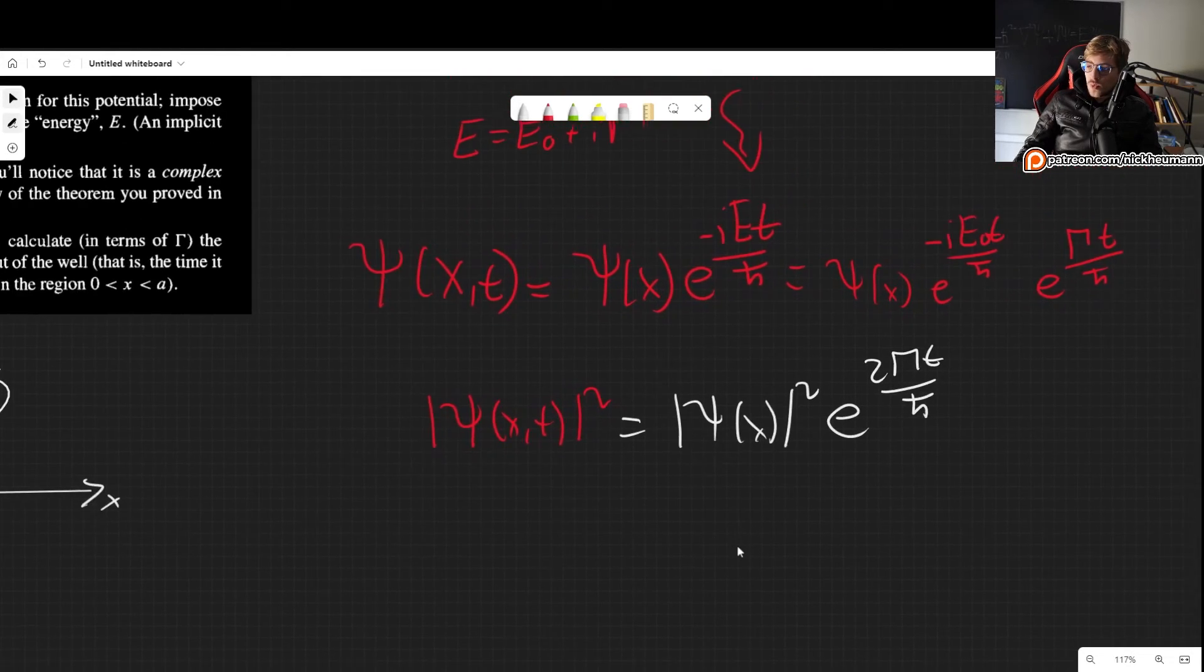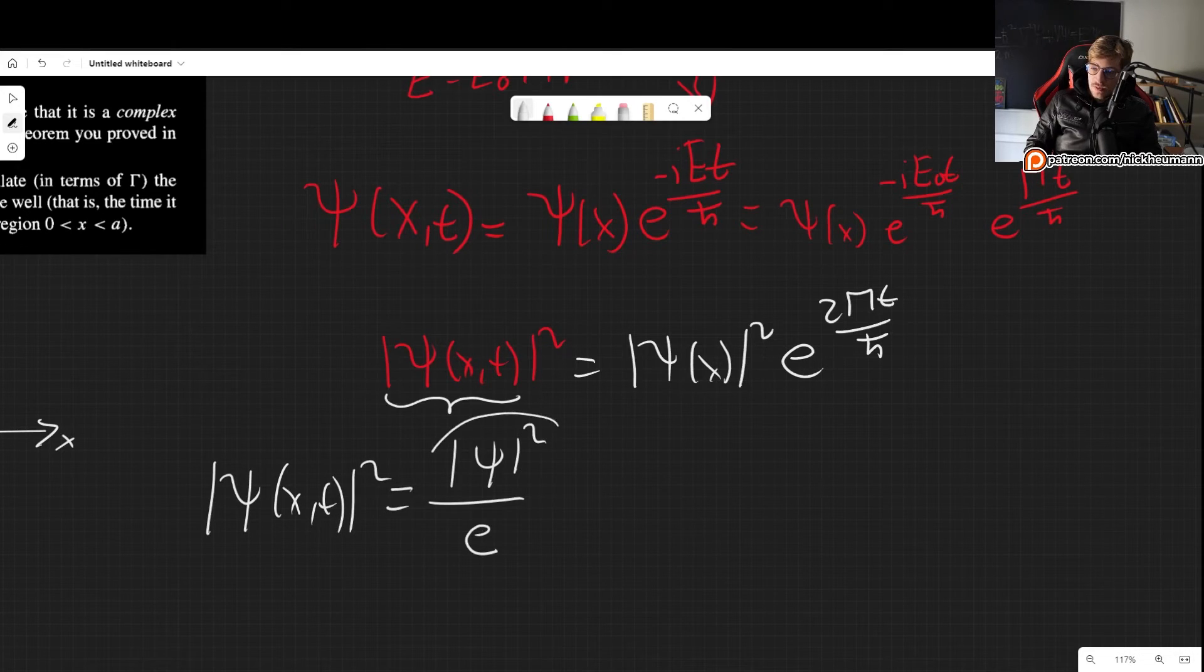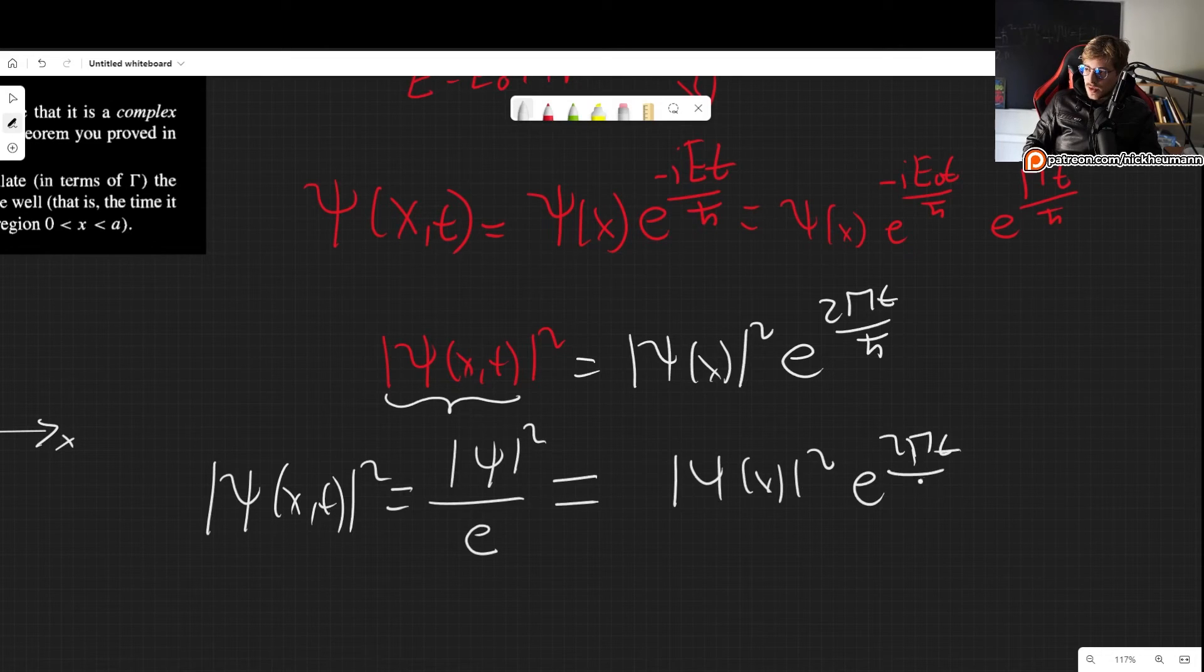And now we want to know what is the probability of finding, basically that our wave function will only have 1 over e. So basically we want this. We want the case where our probability is now this amount. So the initial amount over e. This is the initial probability. We want to know when the initial probability has been reduced to itself divided by e. So this has to be equal to psi of x squared e to the 2 gamma t over h bar. And of course, these two probabilities are the same.